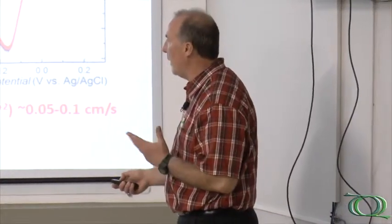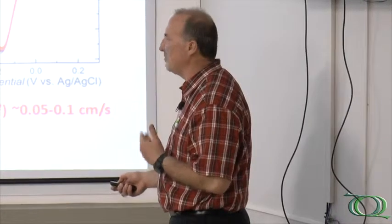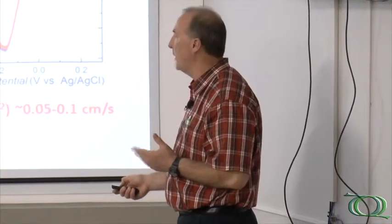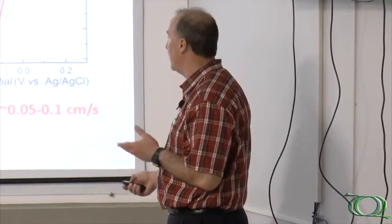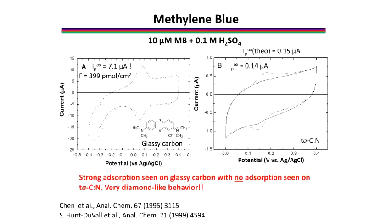Rate constants are 10⁻³ to 10⁻² centimeters per second for this system. Rate constants for the ruthenium system are 10⁻¹ centimeters per second.